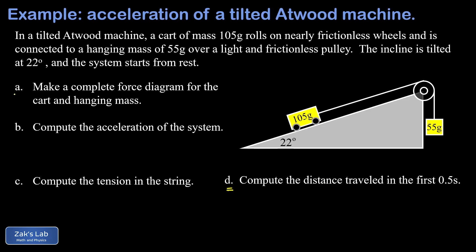In part a we're asked to make a complete force diagram for both of these masses, and that's actually most of the work we're going to do here. We'll start with the force of gravity on the 105 gram cart, symbolically as mg, and note that the force of gravity always points exactly straight down. Plugging in our numbers, 0.105 kilograms times 9.8 meters per second squared, we get about 1.029 newtons.